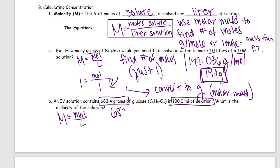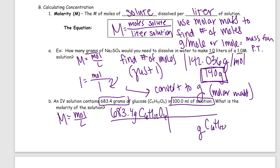I'll start with 683.4 grams of C₆H₁₂O₆ and convert that into moles of glucose using the molar mass. I bring grams of C₆H₁₂O₆ to the bottom and one mole of C₆H₁₂O₆ on top — so that number of grams is going to be the molar mass of glucose. Take a second and calculate that from your periodic table. Separately, you'll also need to convert 100 milliliters to liters.